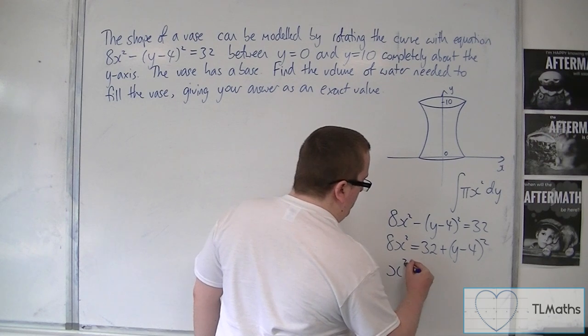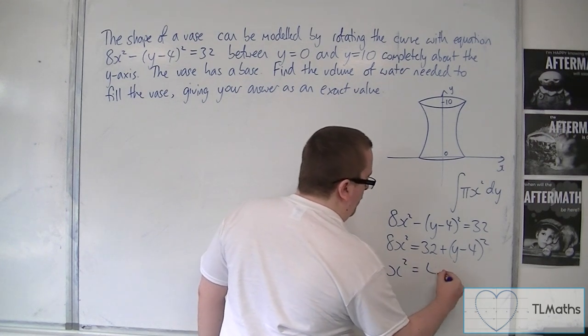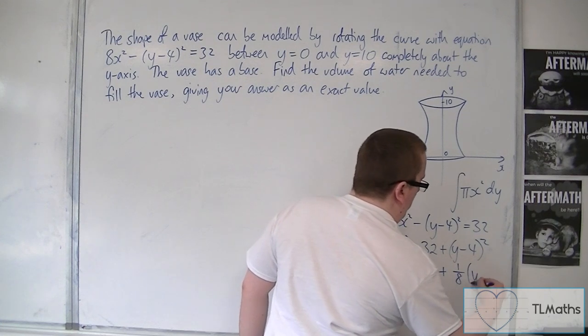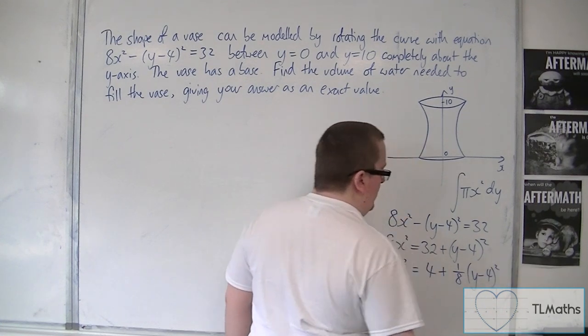And then we can divide both sides by 8. So we're going to get x² = 4 + ⅛(y-4)².